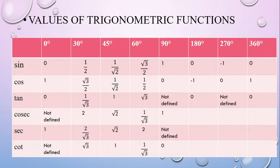For the 45 degree angle, sin theta is 1 by root 2. For the 90 degree angle, the value is 1 above 0. One is the right angle value.